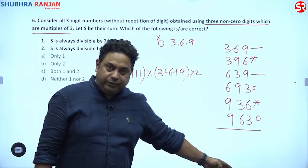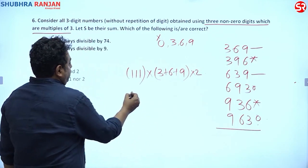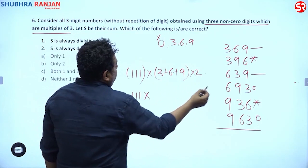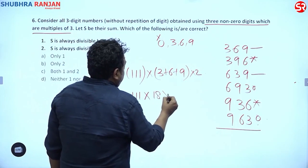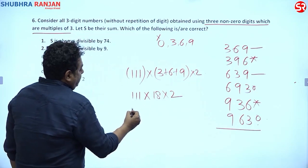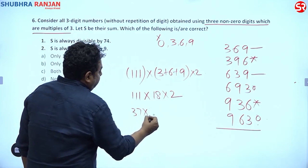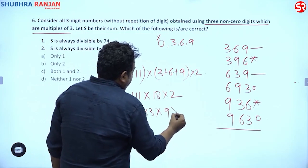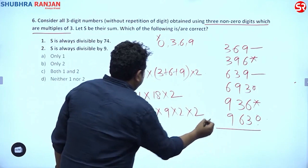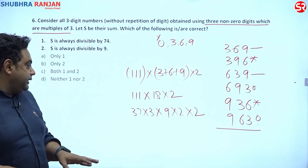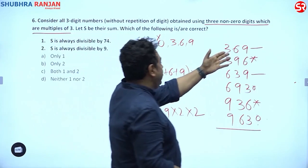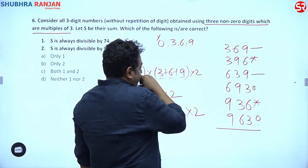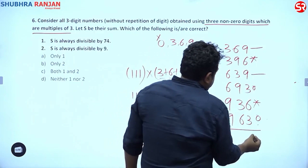The sum works out as: 111 × (3 + 6 + 9) × 2 = 111 × 18 × 2. Since 111 = 3 × 37, this becomes 37 × 3 × 18 × 2. Adding directly: 3 + 6 + 9 = 18, and the total sum S is 3996.